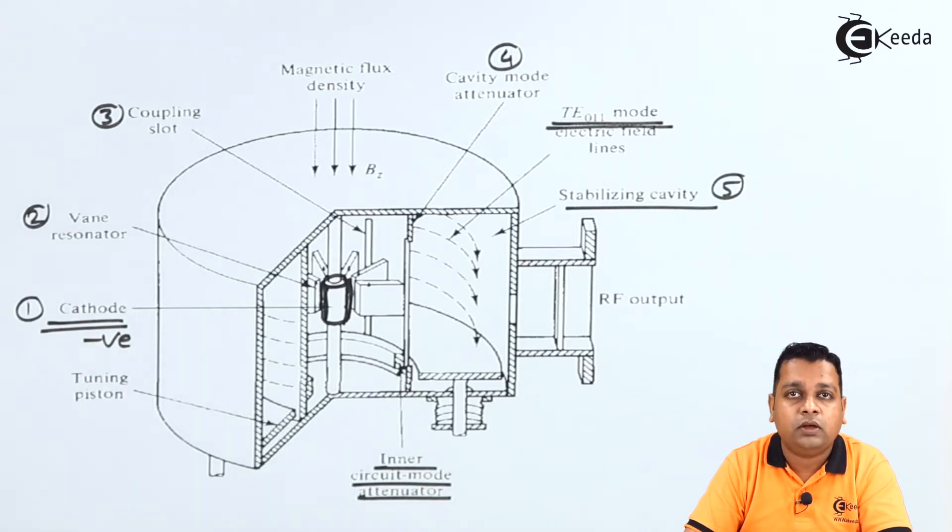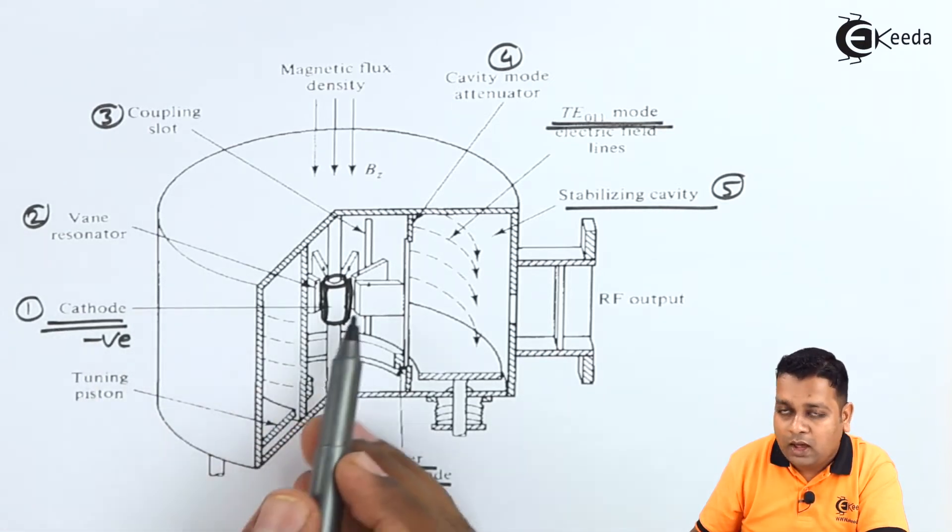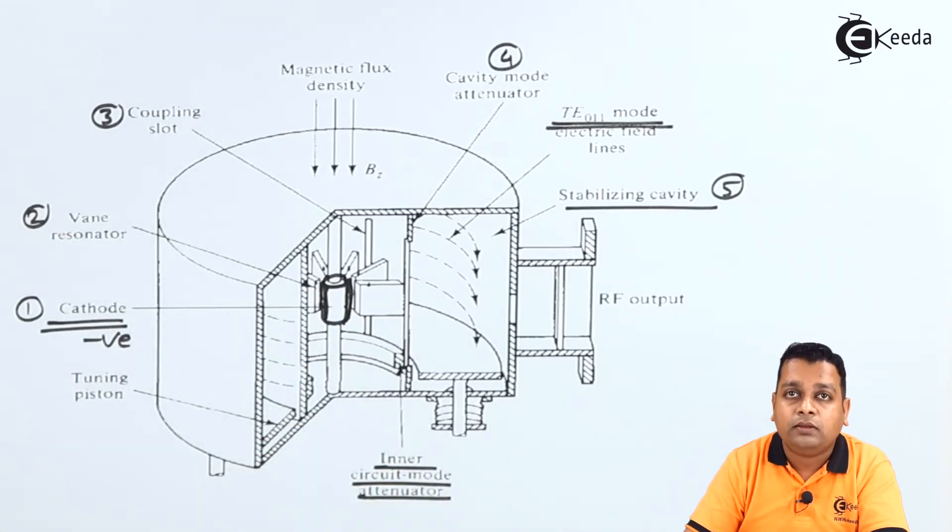You see as the magnetron device is having the two very important electrodes that are cathode and anode and to have the various types of magnetrons, we have made essential modifications into the shapes of the anode, especially the anode is having the resonant cavities here. So along with the cathode and the anode,